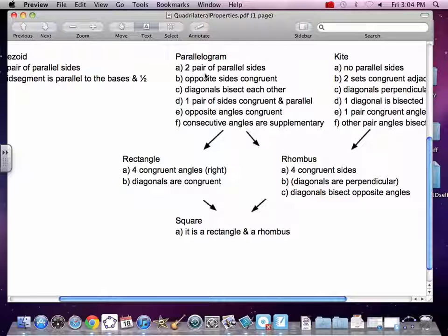It also has diagonals that are congruent. All the properties from above, from parallelogram, come down, but a rectangle has two additional congruent angles, all of them. So four angles, 360 in a circle, makes them all 90 degrees.